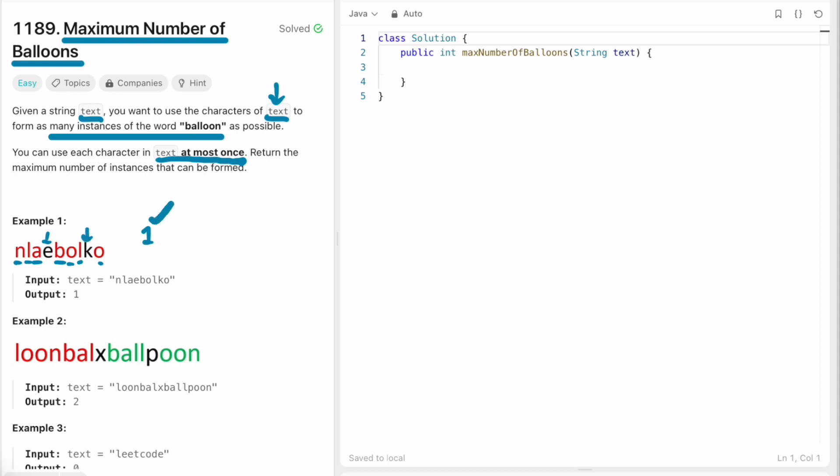You used up most of the characters except these two, and using these you can't form the word balloon, so you return one as the output. You can see that you're making use of how many characters are present inside the word balloon. So let's use a hash map to count how many times these characters are repeating.